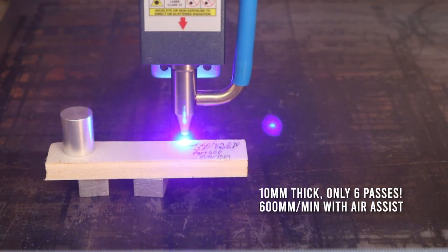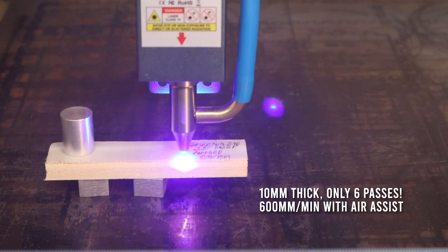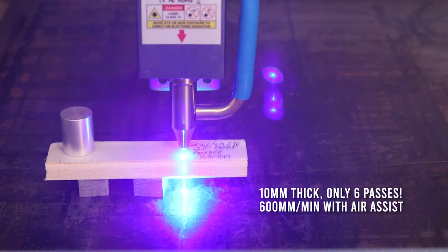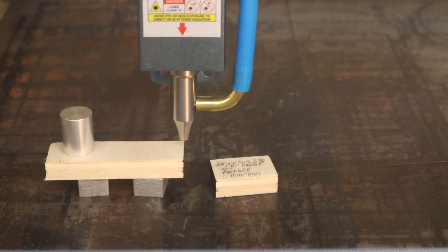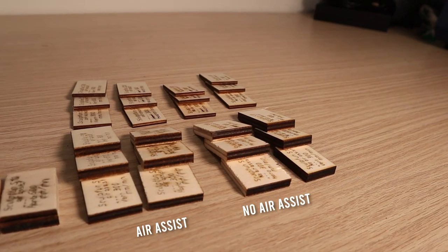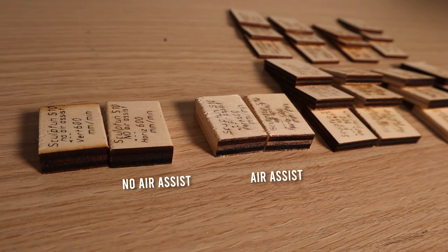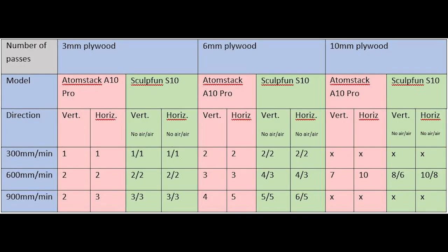This machine has no problems cutting 10mm thick wood. Air assist helps a lot with materials this thick as the cutting performance is greatly improved with air assist. Here is a table of results.